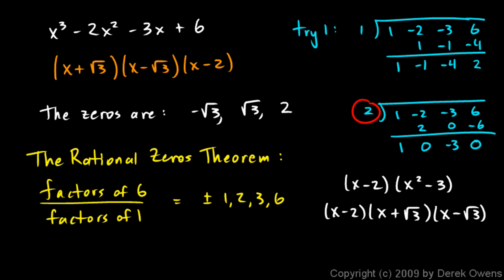Now the Rational Zeros Theorem helps us find—notice here it helped us find the zero, the 2, or the factor that was rational. This one right here. The Rational Zeros Theorem helps us find rational zeros. It would not lead us to these irrational numbers; they don't show up in this list. That's why it's called the Rational Zeros Theorem. Even though the theorem doesn't help us find these irrational roots, finding the one that is rational still helps.